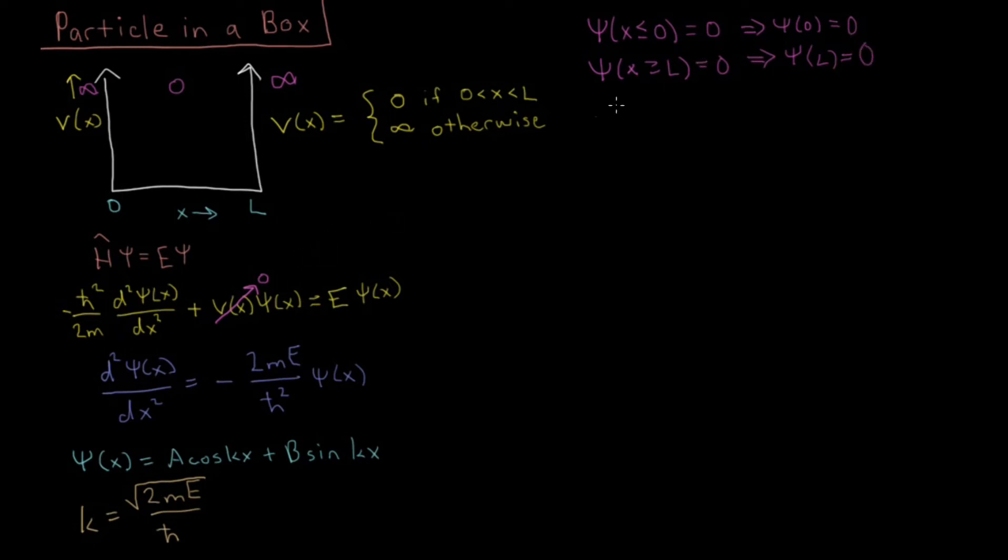So applying these boundary conditions to this functional form that we have here, we can say that psi of 0, which equals 0, is A times cosine of Kx, at x equals 0, is 0, plus B sine, and again Kx at x equals 0, is 0.